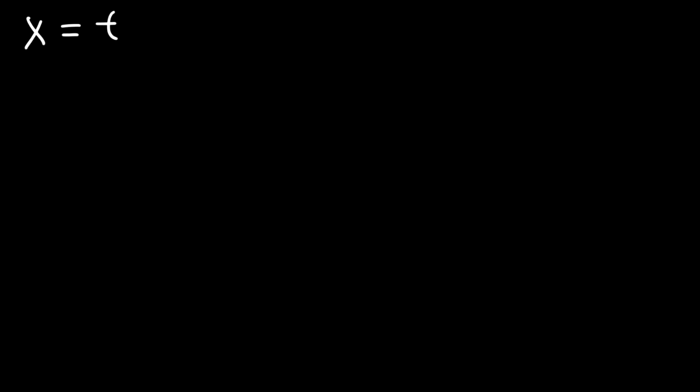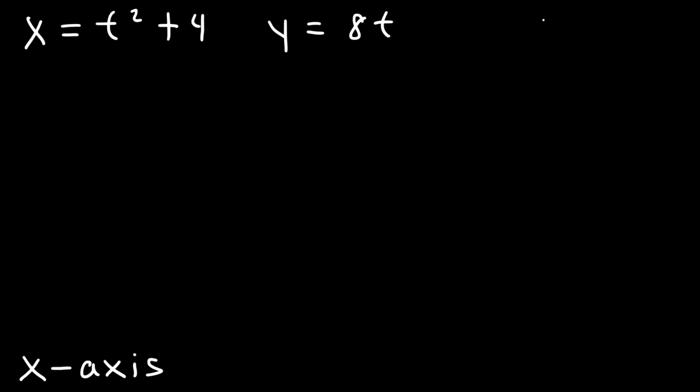In this video we're going to talk about how to find a surface area of revolution of a parametric function. So let's say that x is equal to t squared plus 4 and y is equal to 8t. And we want to find the surface area of revolution when it's rotated about the x-axis from 0 to 2.